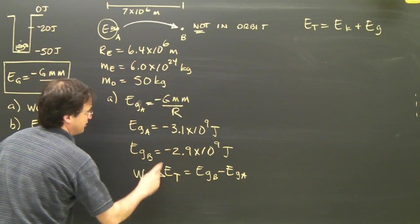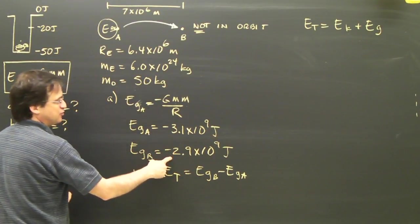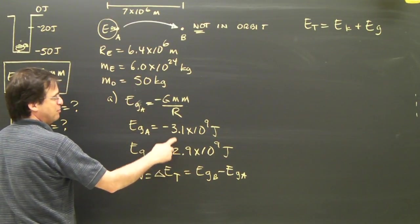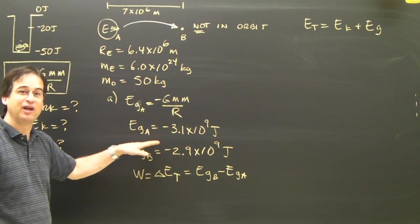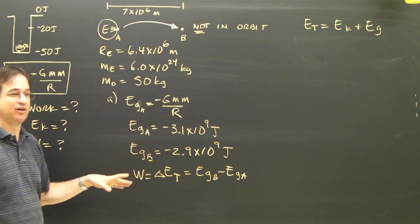So I get B negative 2.9 times 10 to the 9 minus negative 3.1 times 10 to the 9. You've got to keep track of your positives or negatives, or it's not going to work out.